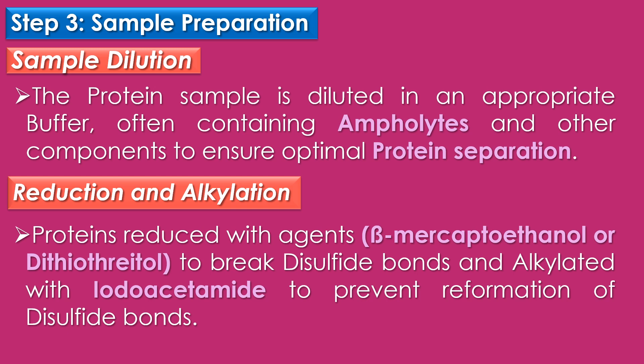Step three is sample preparation, which has two stages: sample dilution and reduction and alkylation. In sample dilution, the protein sample is diluted in an appropriate buffer often containing ampholytes and other components to ensure optimal protein separation. Ampholytes are components which establish the pH gradient in the isoelectric focusing gel. In reduction and alkylation, proteins are reduced with agents like beta-mercaptoethanol or dithiothreitol to break disulfide bonds, and alkylated with iodoacetamide to prevent reformation of disulfide bonds.